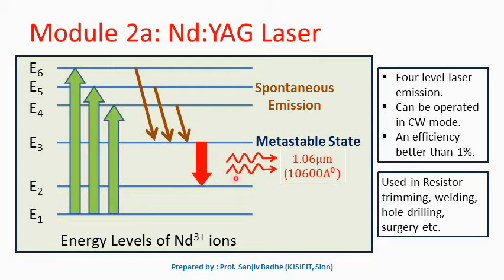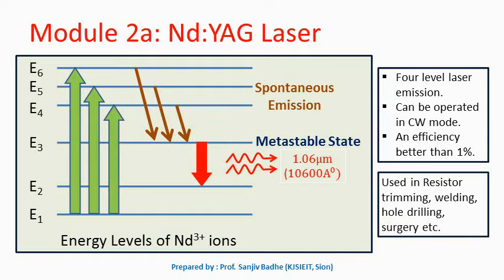We get a laser beam of wavelength 1.06 micrometers or 10,600 angstroms. This wavelength does not lie in the visible region — it lies in the infrared region. Because it is a four level laser system, population inversion can be easily maintained, and therefore it can be operated in continuous wave mode. An efficiency of better than 1% can be achieved. These Nd:YAG lasers are used in industrial applications like resistor trimming, welding, hole drilling, and also in medical applications for surgery.